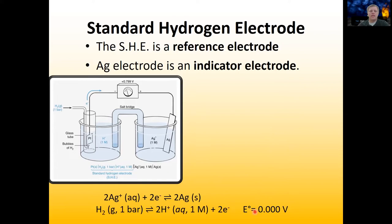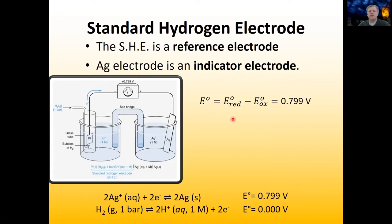In this case we know the standard reduction potential of the standard hydrogen electrode on our left. We know that it is zero, and that means any potential we read on our potentiometer — this 0.799 volts — is only correlated with the reaction happening in the right electrode. The reduction potential is the species being reduced minus the potential of the species being oxidized. Since we know the reference electrode potential is zero, we can solve this equation to figure out the potential of our indicator electrode.